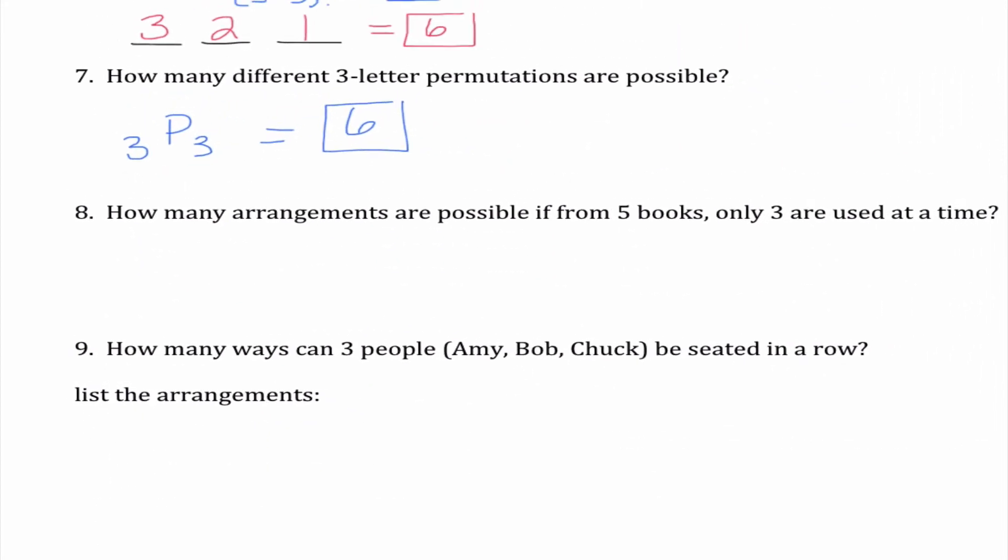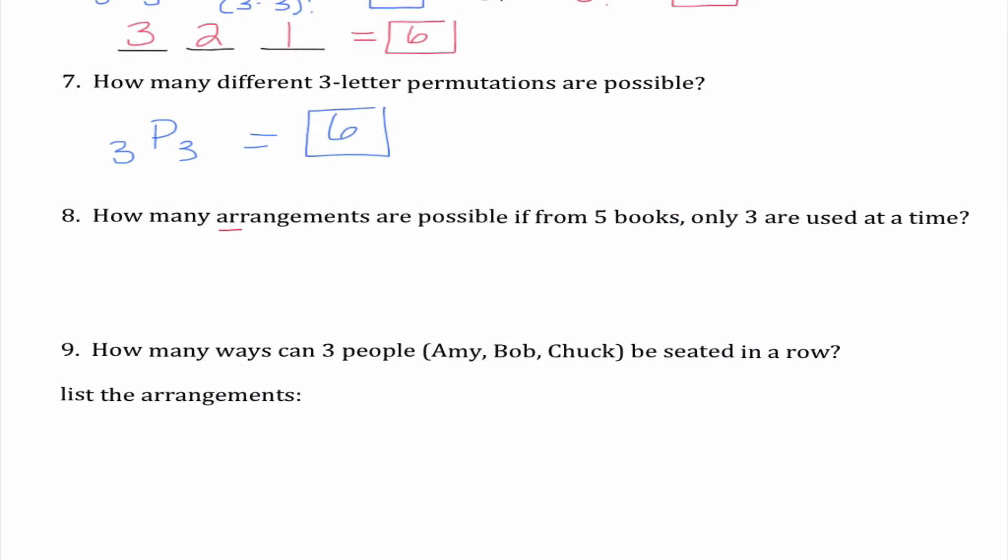Okay how many arrangements and once again I'm going to highlight this word here are possible from five books only three are used at a time. This time since I'm not using all five we cannot use that factorial rule. So what I'm going to do instead is 5P3. So this would be like 5 factorial over 5 minus 3 factorial. So 5 factorial over 2 factorial becomes 3 times 4 times 5 which is 60.